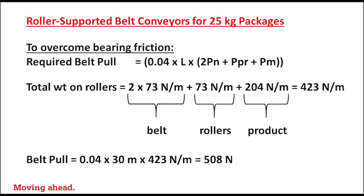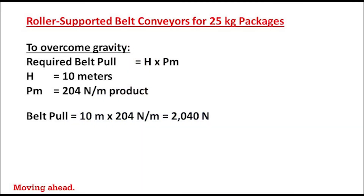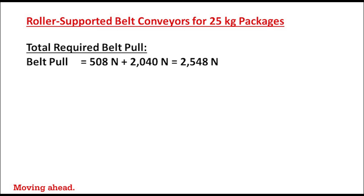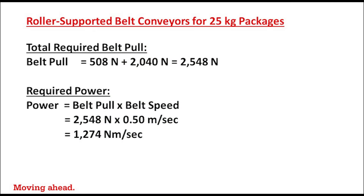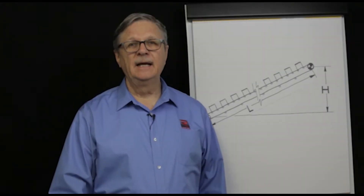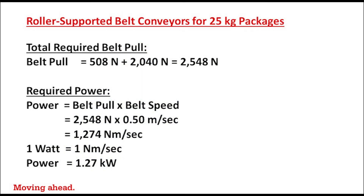Now we add the component of belt pull required to overcome gravity. Since H is 10 meters and the weight per meter of product is 204 newtons per meter, H times pm gives a belt pull requirement of 2040 newtons. Adding the two components together: 508 newtons plus 2040 newtons equals 2548 newtons total. With a belt pull of 2548 newtons and a belt speed of 0.5 meters per second, we get a required power of 1274 newton meters per second, which equals 1.27 kilowatts.